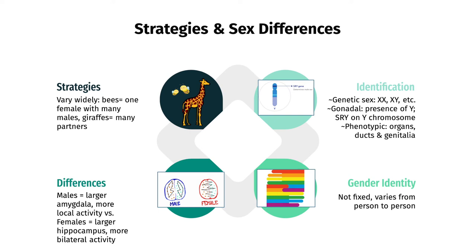Then the SRY, or sex-determining region on the Y chromosome, comes in and causes the testes to form. There are also many sex differences in terms of the brain, with males having a larger amygdala, visual cortex, and more local or regional activity, while females have a larger hippocampus, greater sensitivity to social cues and stresses, and more bilateral activation across the brain. Also note that gender identity is not fixed and can vary from person to person.